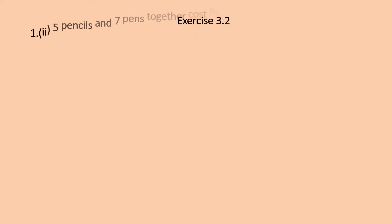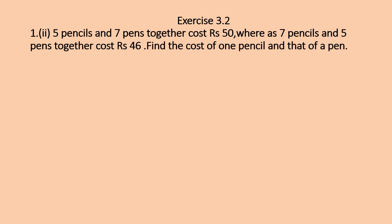Moving to Exercise 3.2, Question 1, second part: 5 pencils and 7 pens together cost ₹50, whereas 7 pencils and 5 pens together cost ₹46. Find the cost of 1 pencil and 1 pen. We need to find the cost of a pencil and a pen, so take variable x as the cost of a pencil and variable y as the cost of a pen. Two conditions are given; accordingly, frame the equations.